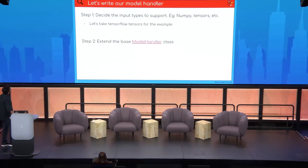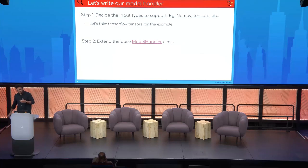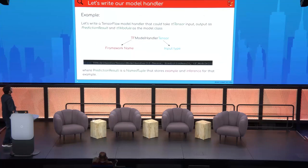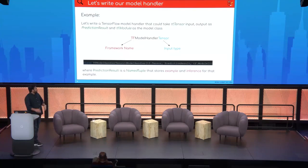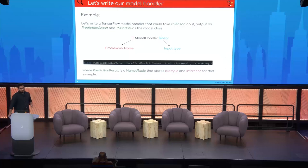Let's go step by step. We'll take TensorFlow as our framework. Once we've decided on a TensorFlow model handler using tensors, we extend the model handler base class. When naming a model handler, the usual convention is framework name first, then model handler, then the input type — so something like TFModelHandlerTensor. As I explained, PredictionResult is a named tuple for the prediction output.